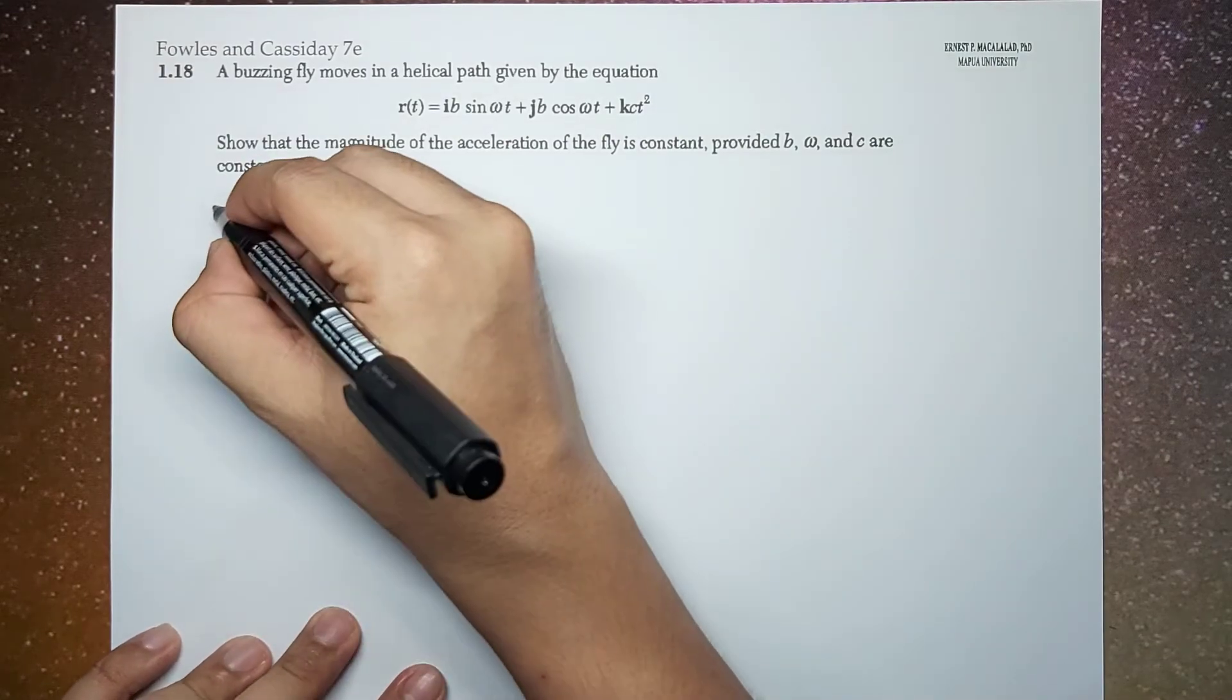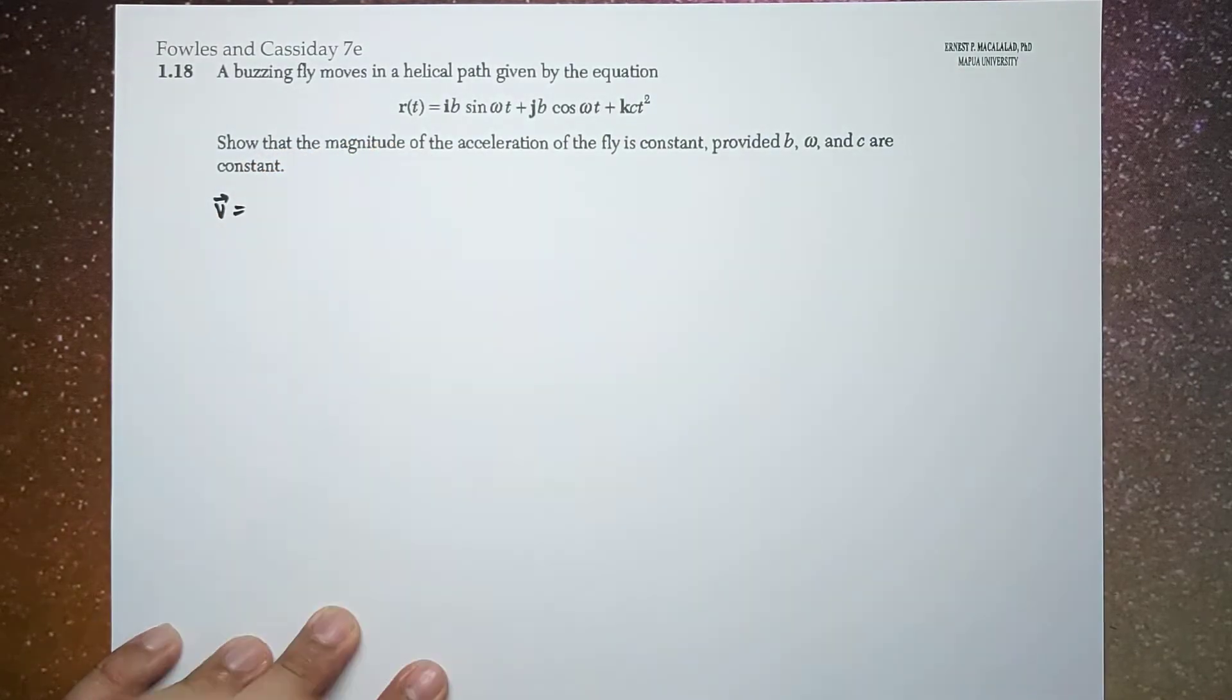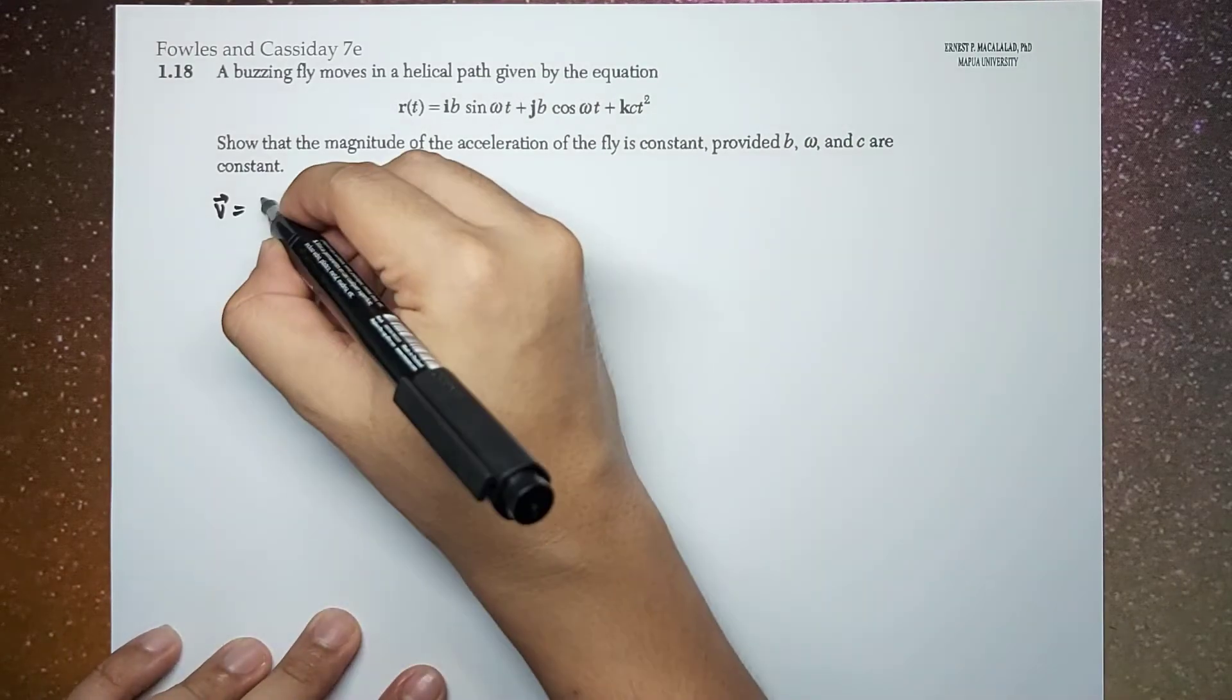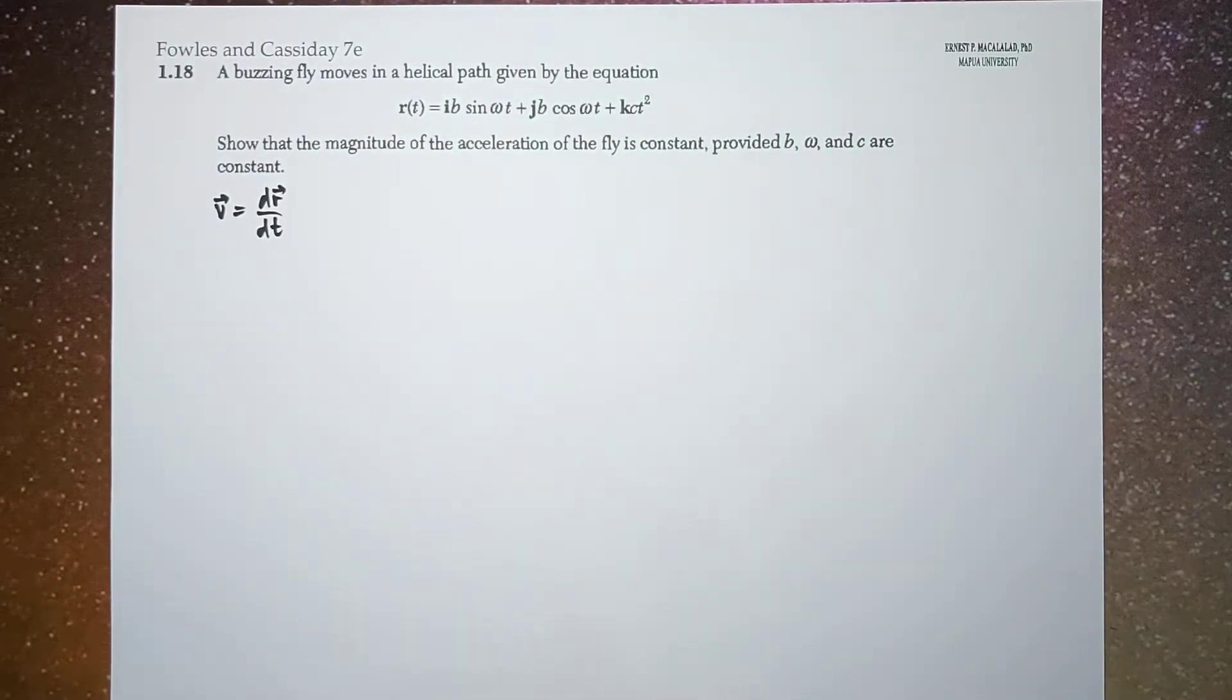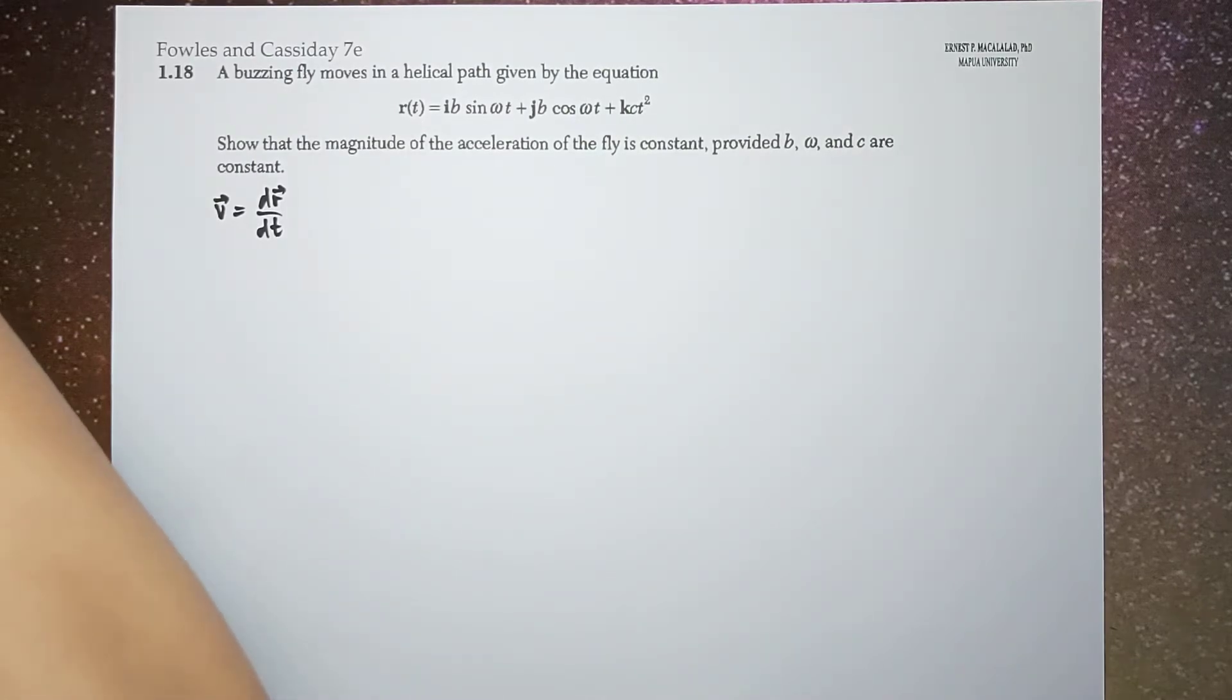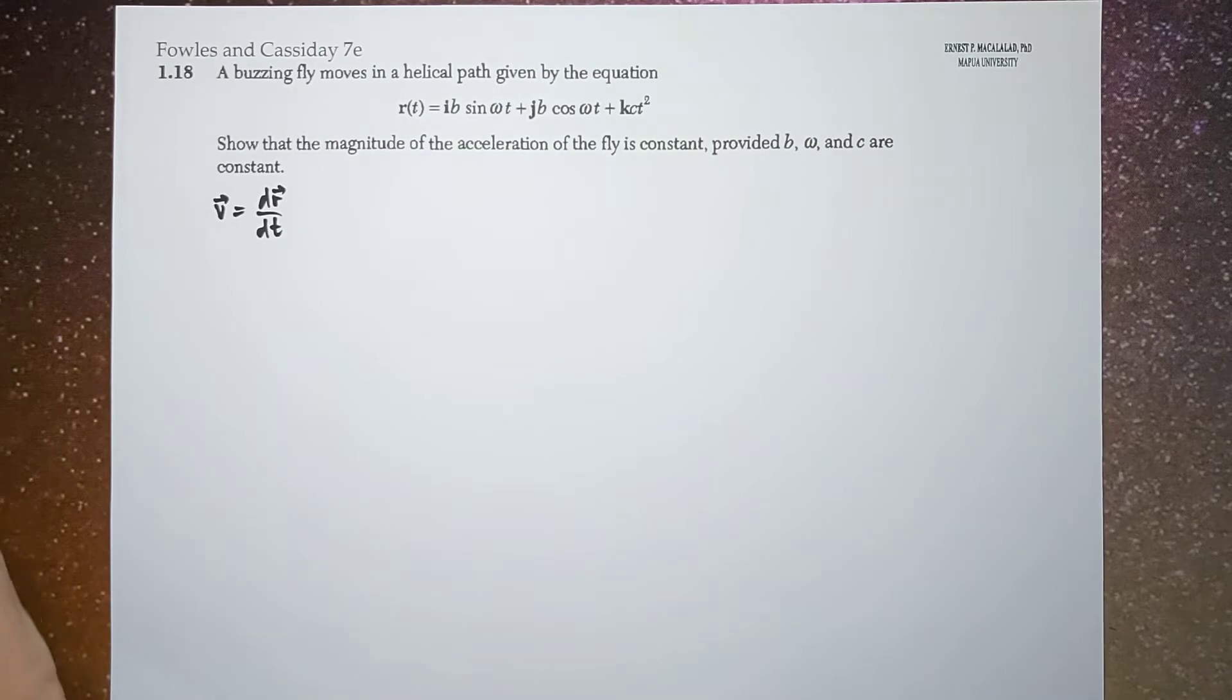So before that, let's first calculate the velocity function, which is the first derivative of your position with respect to time. And after this, we're going to use this to get the acceleration function by differentiating the velocity function again.